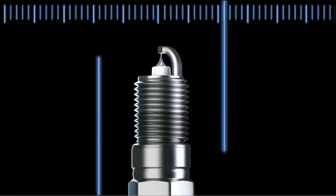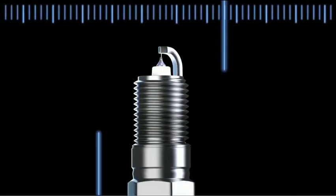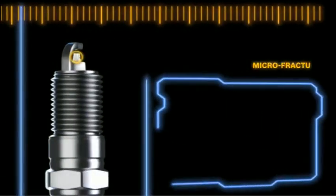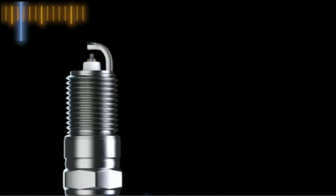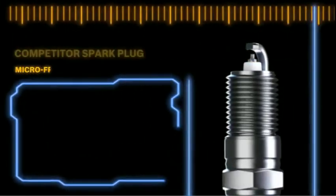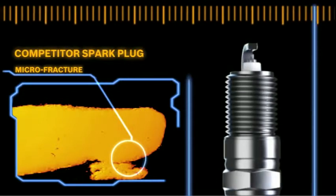Yet competitors still employ pulse lasers or resistance welding to build their spark plugs. Thermal shock and durability tests show that these alternative welding processes can result in cracking of the weld and loss of platinum on the ground electrode, which can cause premature spark plug failure.